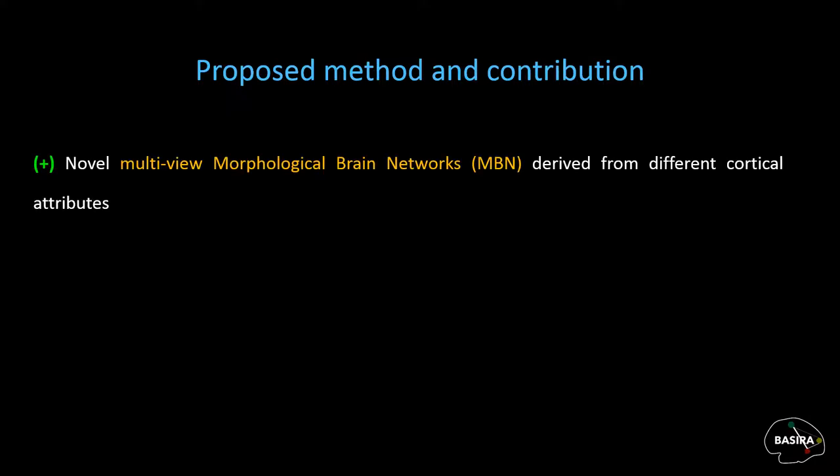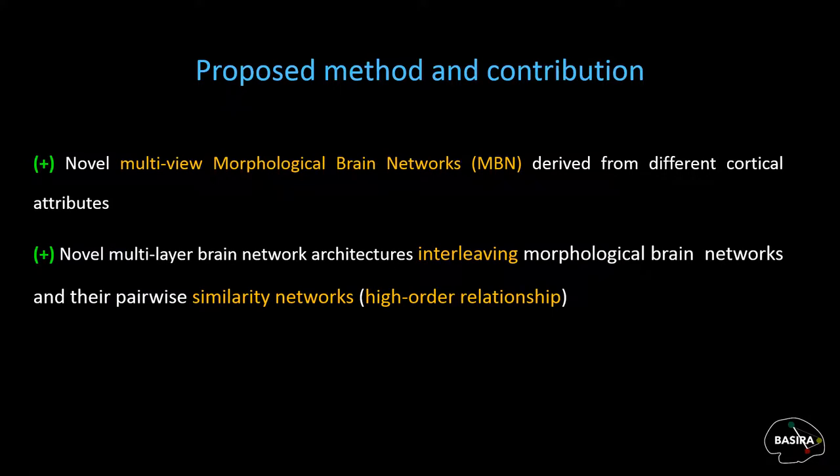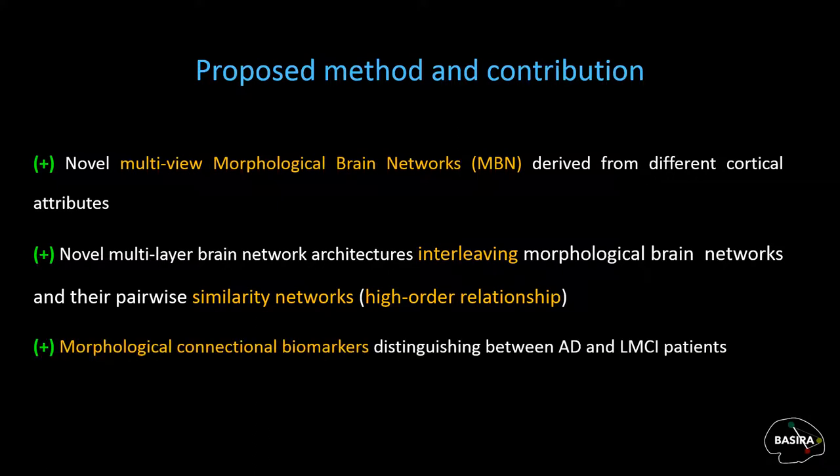So in this work, we introduce multiple morphological brain networks derived from T1-weighted MRI, where each network is built using a specific cortical attribute such as cortical thickness or sulcal depth. Then, based on this multi-connectional representation of brain morphology, we further propose novel network architectures interleaving morphological connectivity networks and their pairwise similarity networks, modeling their high-order relationships. We use these new architectures to investigate the complex relationship between morphological views for identifying late MCI morphological connectional biomarkers distinguishing between late MCI and AD patients.